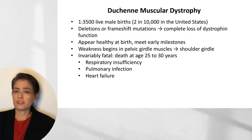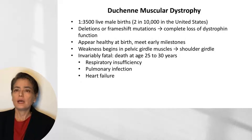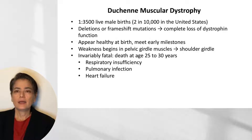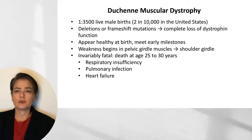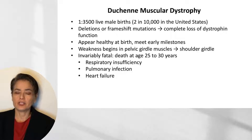Duchenne muscular dystrophy is the most common of the muscular dystrophies, accounting for about 1 in 3,500 live male births, with an incidence of about 2 in 10,000 in the United States. The etiology involves deletions or frameshift mutations that result in complete loss of dystrophin function — this is different from Becker muscular dystrophy, in which some function is maintained. In these patients, there is absolutely no functional dystrophin.